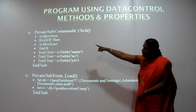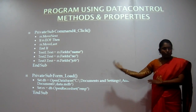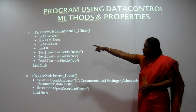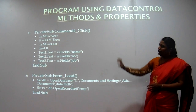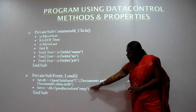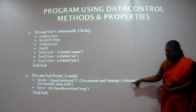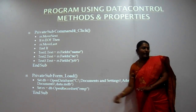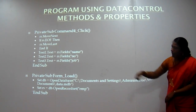In the fourth command button, we use the MoveNext method. When moving to the next record, we check whether we are at the end of the record using the EOF property — that is end of file — then we move to the last record. In the form load property, we give the database name, which is the path name of our database, and set the recordset property to our table name. EMP is our table name, and we give the path name as open database.